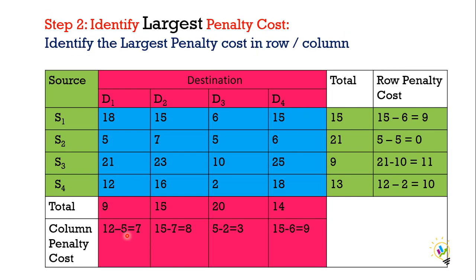The second step is to identify the largest penalty cost. Take into consideration all the values of row penalty cost and column penalty cost and identify the largest value. Row penalties are 9, 0, 11, and 10. Column penalties are 7, 8, 3, and 9. Among all these values, 11 is the largest penalty cost. So in Vogel's Approximation Method, the second step is to identify the largest penalty cost.